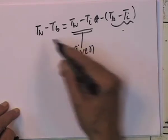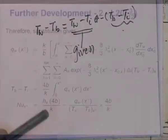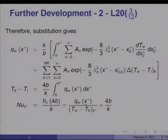T_bulk minus T_i would obviously equal (4b/k) times the integral from 0 to x* of q_w(x_naught*) dx_naught*, simply from the heat balance. Therefore, the Nusselt number is given by q_w(x*) divided by (T_w,wall minus T_bulk)(x*) times (4b/k), where T_w,wall minus T_bulk is written as T_w,wall minus T_i minus (T_bulk minus T_i), which has been evaluated.